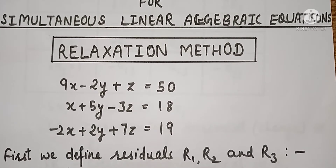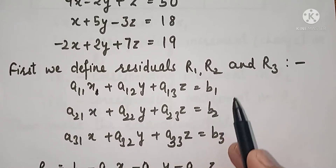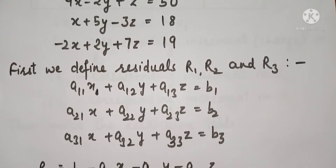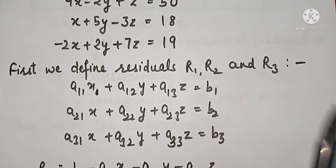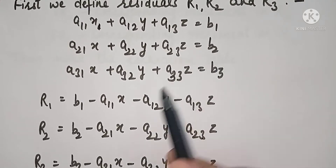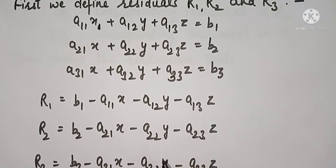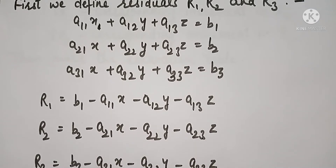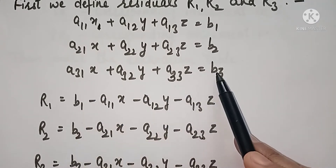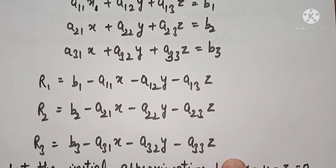First, we will do the Relaxation Method. Suppose you have a system of linear equations given — three non-homogeneous equations in X, Y and Z variables. So first of all, we will find the residuals R1, R2 and R3. R1 is B1 minus the sub-terms moved to the right. Similarly, R2 is B2 minus those sub-terms, and R3 is B3 minus those sub-terms. So we write R1, R2 and R3.